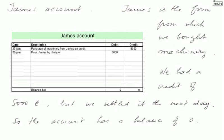Then, James' account. James is the firm from which we bought machinery. We had first of all a credit of 5,000 euros to James, but we settled it the next day. We purchased the machinery on the 27th and paid James by check on the 28th. So the account has a balance of zero.